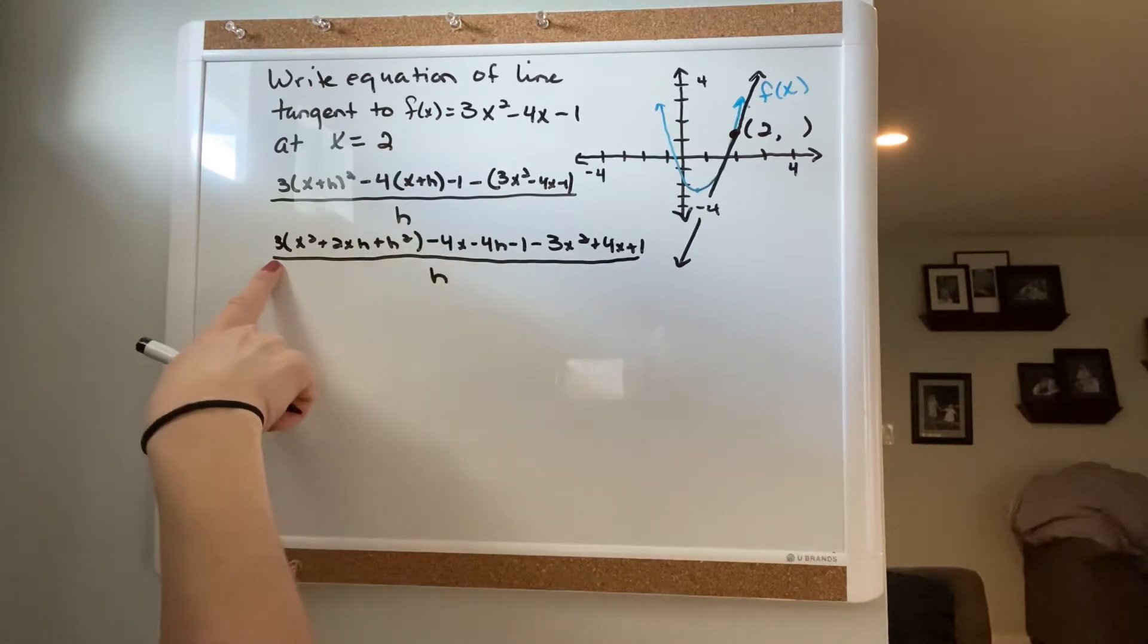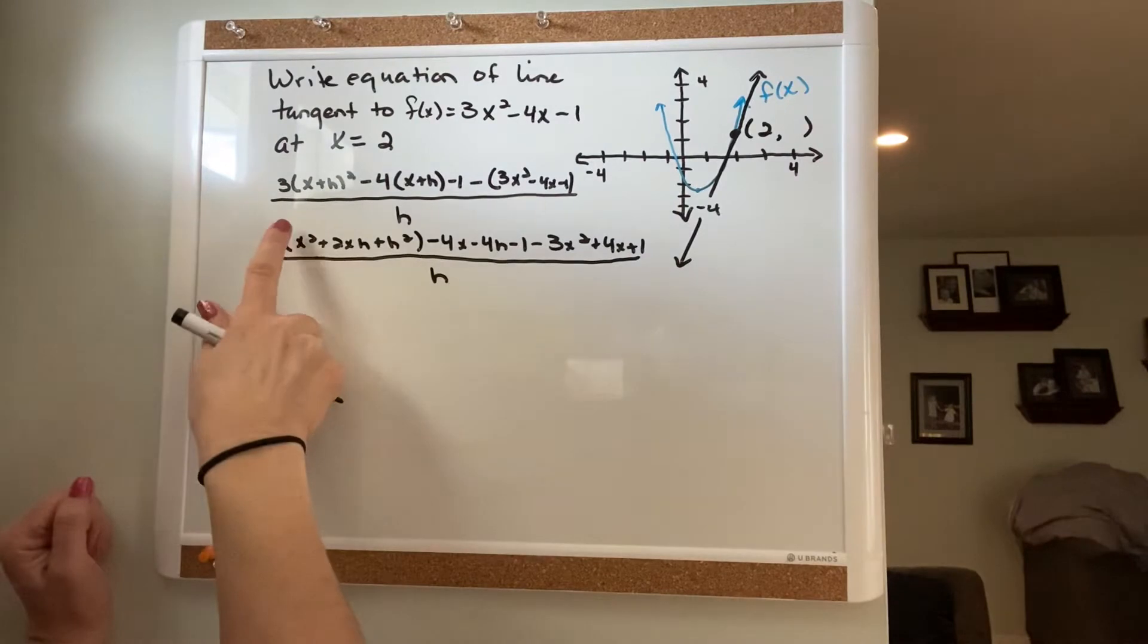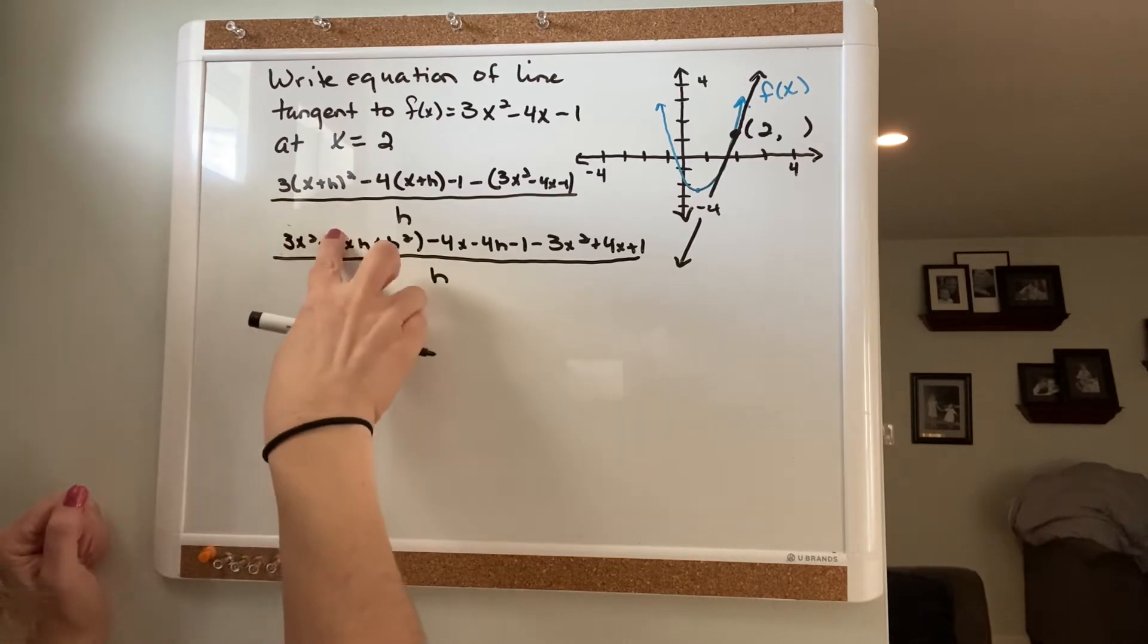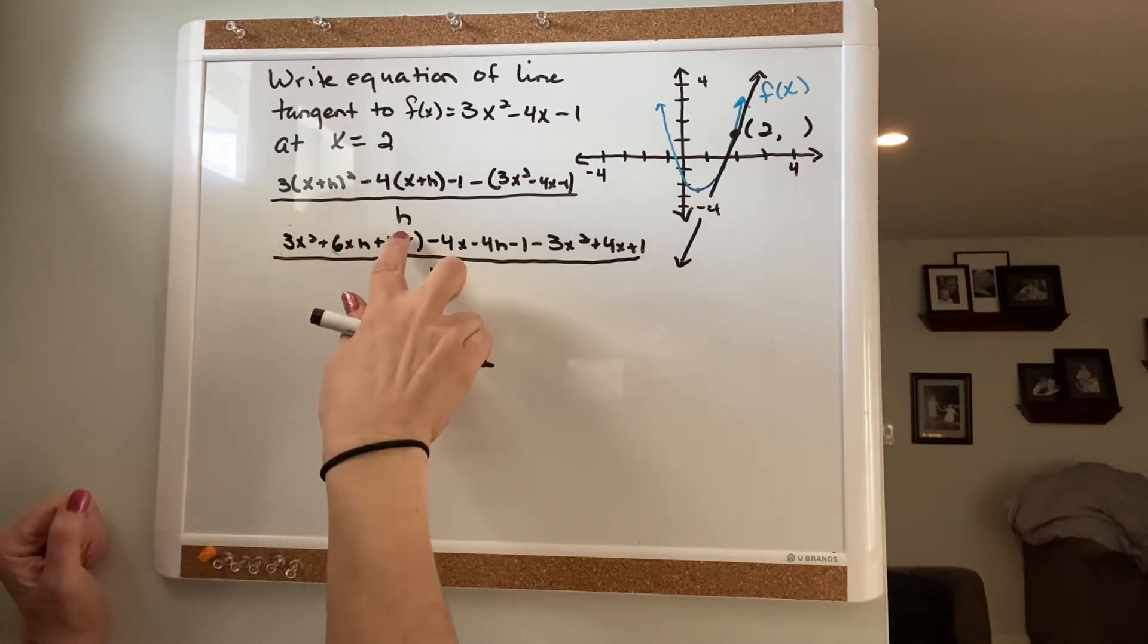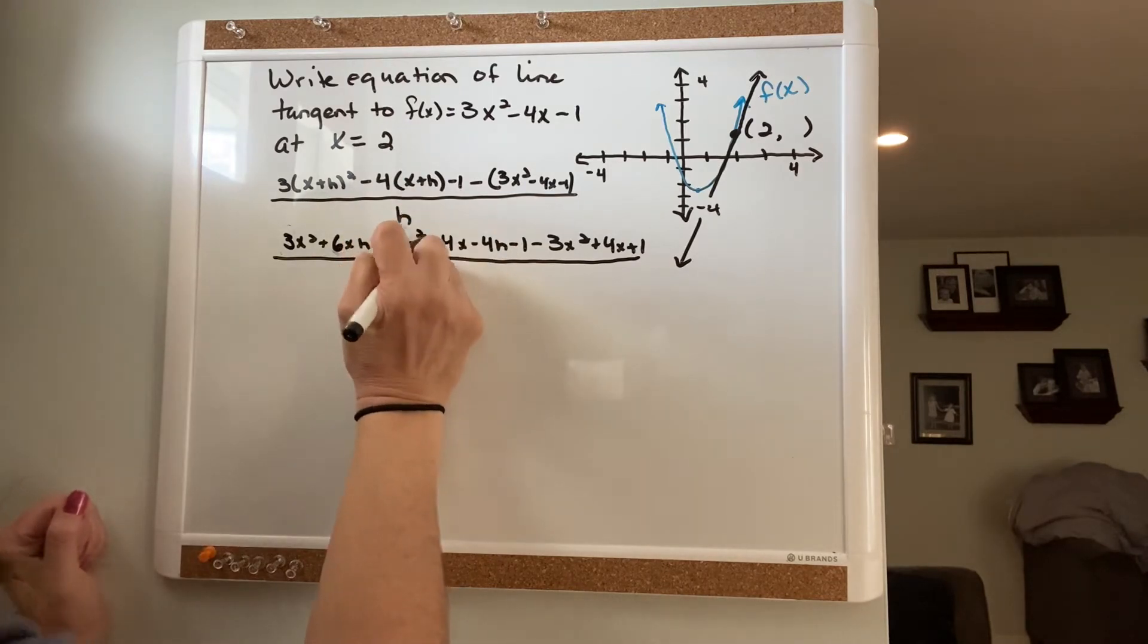Then distribute the 3 through. Because I'm running out of space here, I'm actually going to erase this and distribute the 3 through, so that would give me 3x² plus 6xh plus 3h².